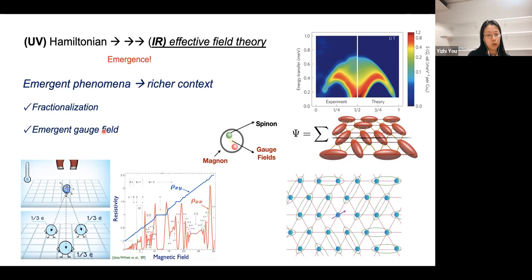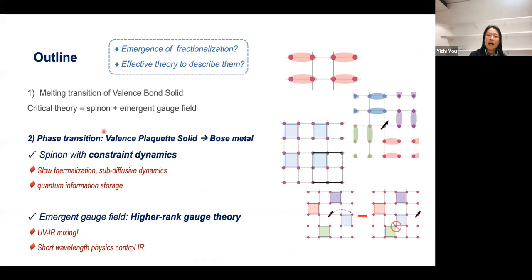These emergent gauge fields play the role of a gluon which minimally couples with the fractionalized quasi-particle, enhancing strong interaction between them. Today I want to address two types of questions: first, what type of concrete condensed matter system can exhibit symmetry fractionalization of quasi-particles and emergent gauge fields, and second, if they do exist, how can we develop an effective field theory to describe them and capture the salient features?